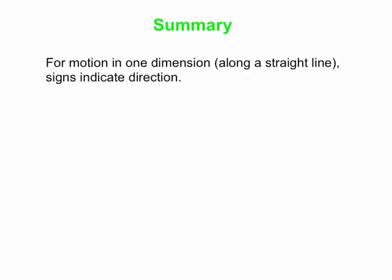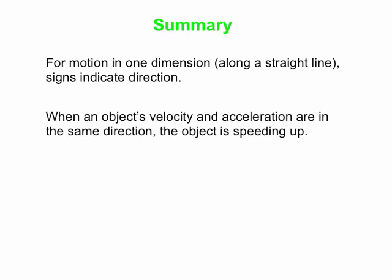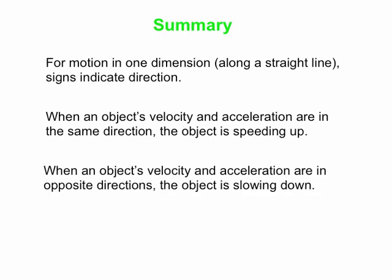Let's summarize what we learned. When talking about motion in one dimension along a straight line, use a sign to indicate direction — choose a positive direction, and the opposite direction is negative. We don't generally use the word deceleration; we just use acceleration, which in physics can describe situations where the object is speeding up or slowing down. When the velocity and acceleration are in the same direction, the object speeds up; when they are in opposite directions, the object slows down.